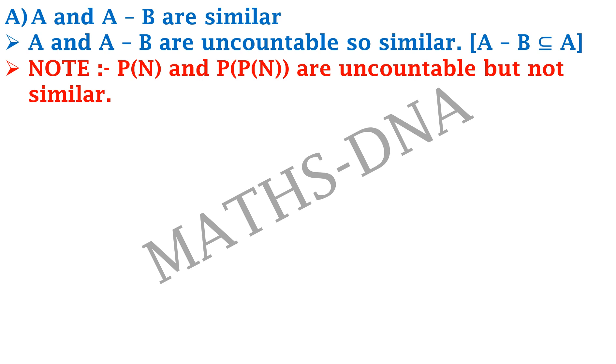Here both the sets are uncountable but they are not similar because it's not possible to be similar over here. So when you get two uncountable sets similar: when one of them is a subset of another after subtracting them.